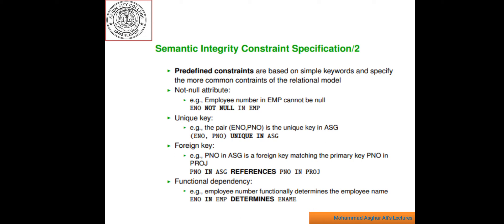Foreign key. The project number PNO in relation ASG is the foreign key matching the primary key PNO of the relation PROJ. In other words, a project referred to in relation ASG must exist in relation PROJ. So, PNO in ASG referenced PNO in PROJ. This is the foreign key.